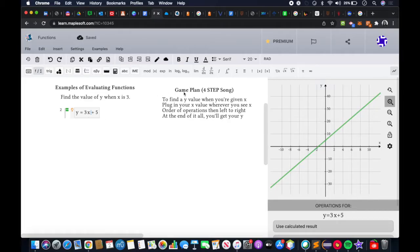Let's refer to the first step in our game plan. To find a y value when you're given x, plug in your x value wherever you see x. x in this case is referring to the letter x. We see the letter x right here next to the 3, which is the slope.